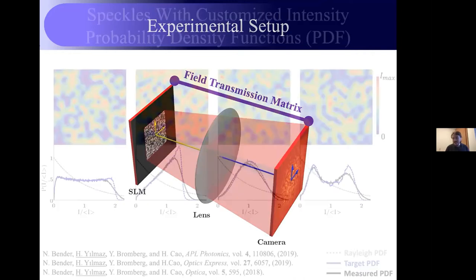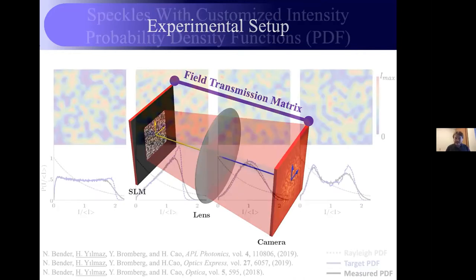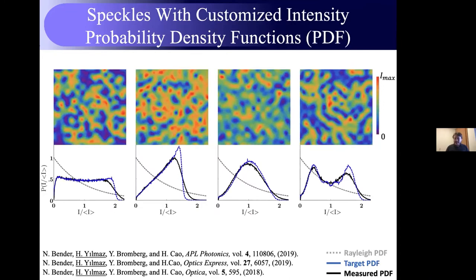We generated speckle patterns with very different statistics. Here you see different speckle intensity patterns on top and on the bottom the probability density function of the intensities. For contrast, I show the Rayleigh statistic intensity distribution, which is a negative exponential, and also the statistical distribution of each speckle pattern. The blue dashed line is the statistical distribution we aimed for, and the black line is what we experimentally obtained. There's a difference due to noise in the system.